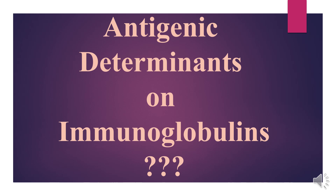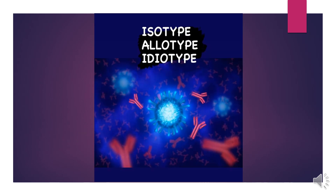Now we will discuss the different types of antigenic determinants. The antigenic determinants are of three major types: the isotype, allotype, and idiotype. We shall discuss each of these.